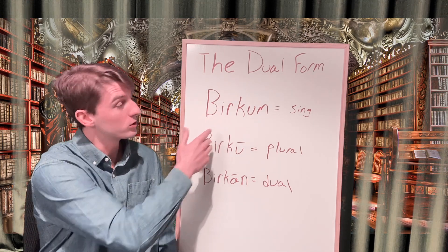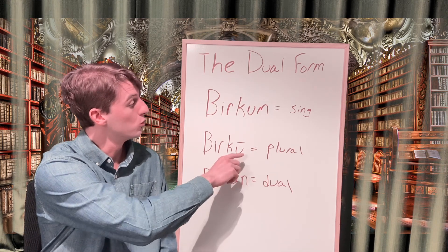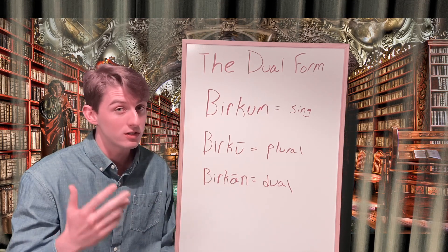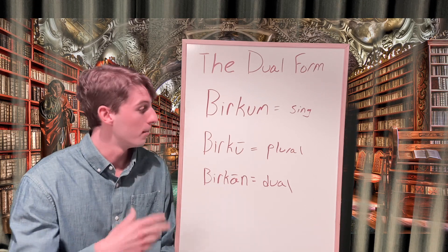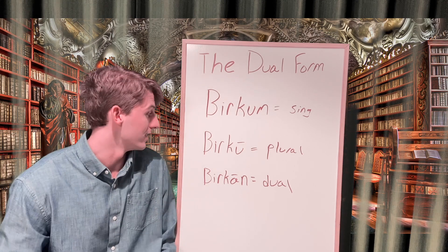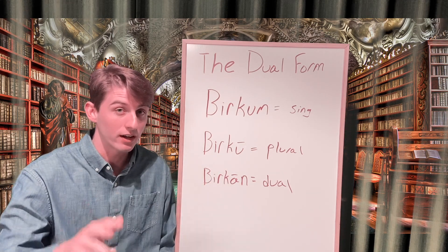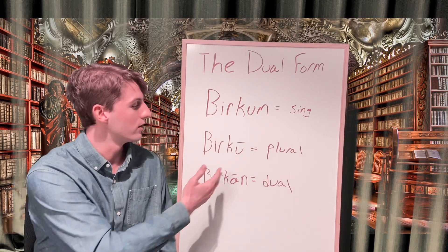Here we have berkum, which means knee, specifically one knee. Then we have the plural berku, which means more than one. This could still be used for two knees, but it's also broader than that and could mean four or maybe a hundred knees. But then berkan is specifically talking about two knees. That's when the dual form would be used.